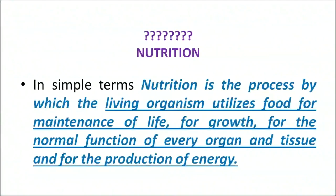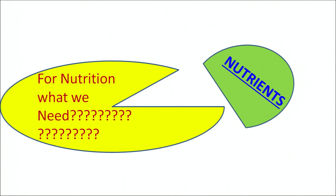In simple terms, nutrition is a process by which a living organism utilizes food for its maintenance of life, for growth, and for the normal function of every organ and tissue. Nutrition depends on the nutrients present in the food. Let us see what the major nutrients present in our food are.